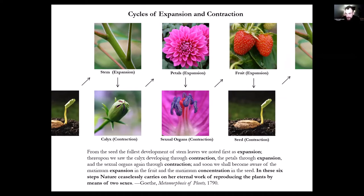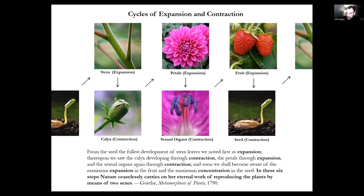Expansion is an outward growth, contraction is a pulling inward movement — almost like a breeding cycle where nature is pulsating, pulling and pushing fluids. Goethe says the fruit shows maximum expansion and the seed maximum concentration. In these six steps, nature carries on reproducing plants by two sexes. So expansion and contraction are actually the sexual, polarized forces of nature — a gendered basis of natural production. This chiastic, dual model is an engine that outputs forms.